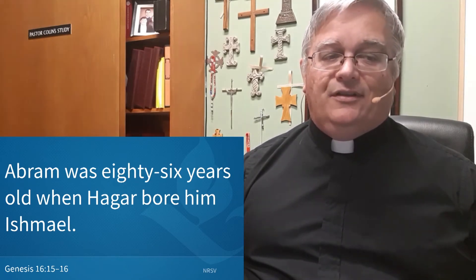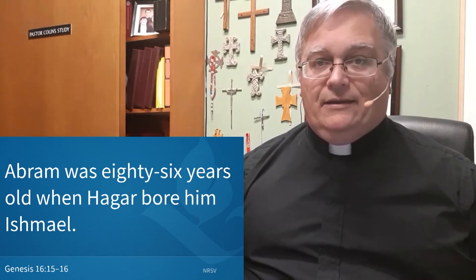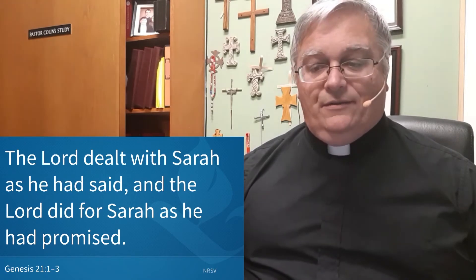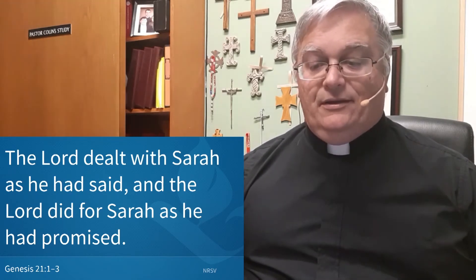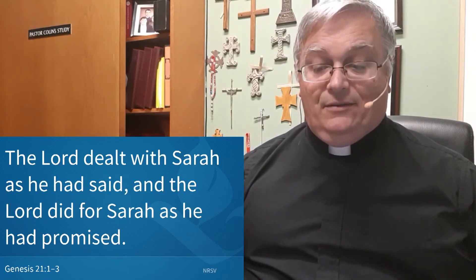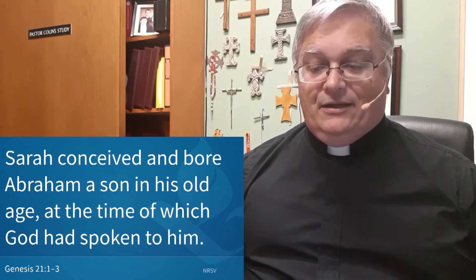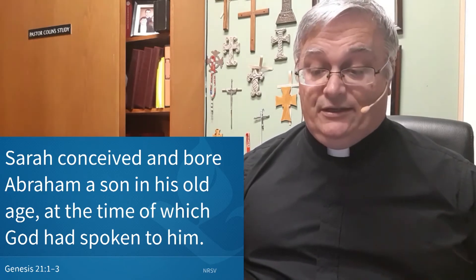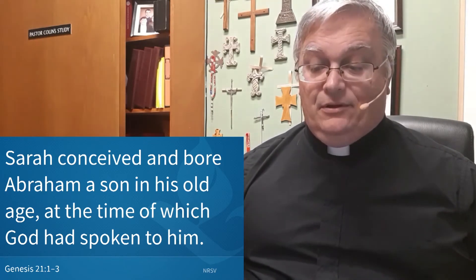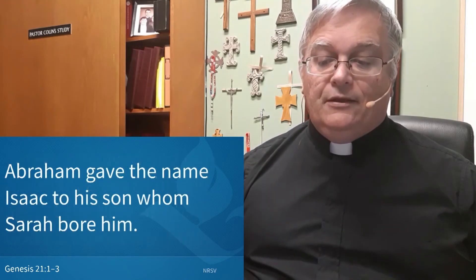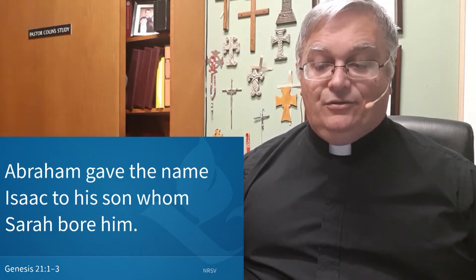Isaac, though, was the secondborn, and born to Sarai, or Sarah. From Genesis 21: The Lord dealt with Sarah as he had said, and the Lord did for Sarah as he had promised. Sarah conceived and bore Abraham a son in his old age — as if 86 wasn't old enough — at the time of which God had spoken to him. Abraham gave the name Isaac to his son whom Sarah bore him.